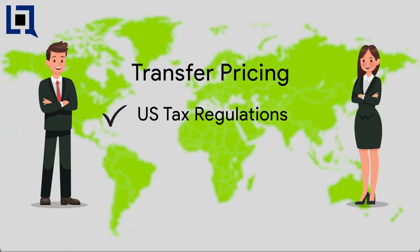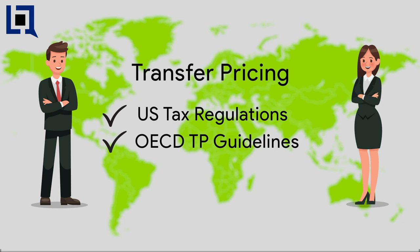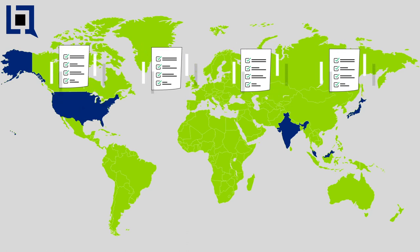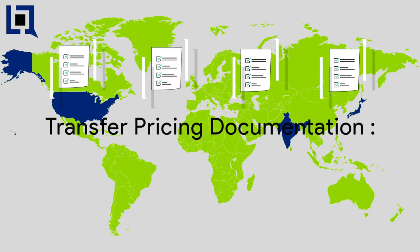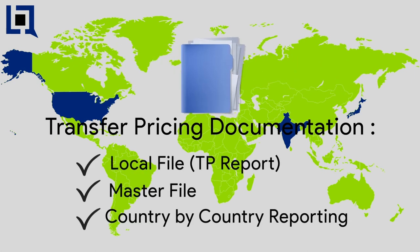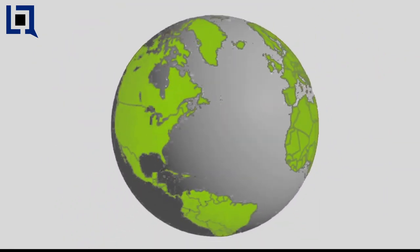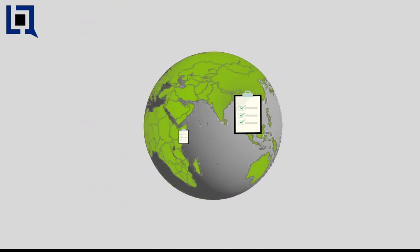United States is a member of OECD countries which has recently introduced the BEPS plan. It requires added compliance in transfer pricing, non-compliance of which can further lead to disputes and hefty penalties. Generally, transfer pricing compliance requires two major formalities: transfer pricing documentation maintaining all the documentations related to all the transactions, and filing different statutory forms with the country's income tax authorities.